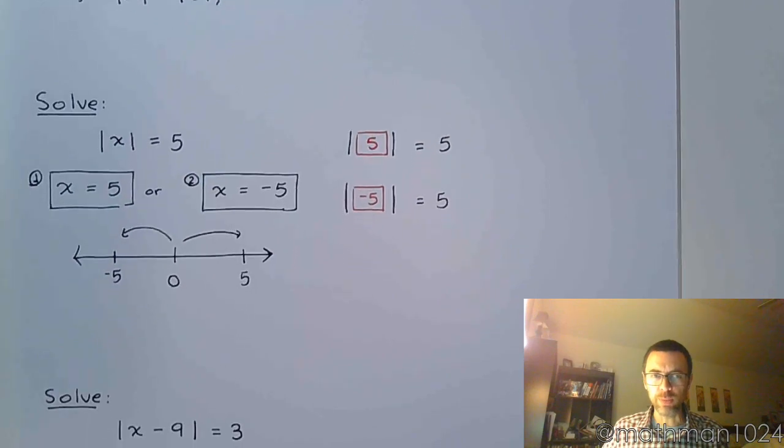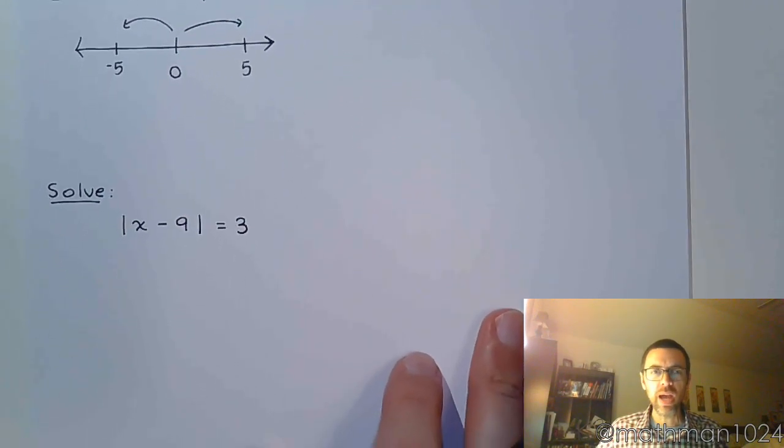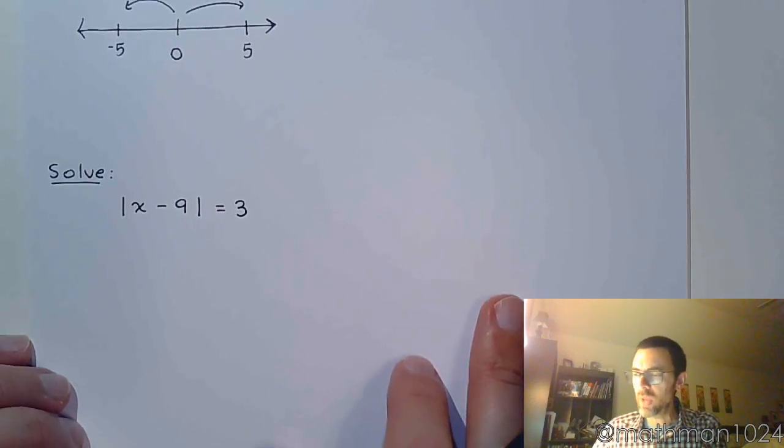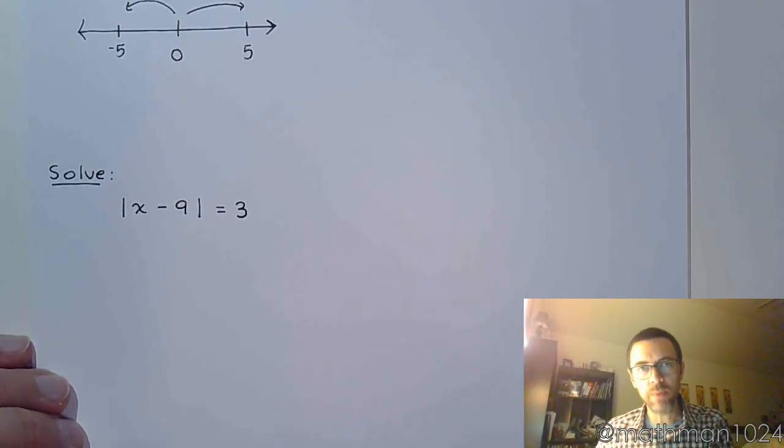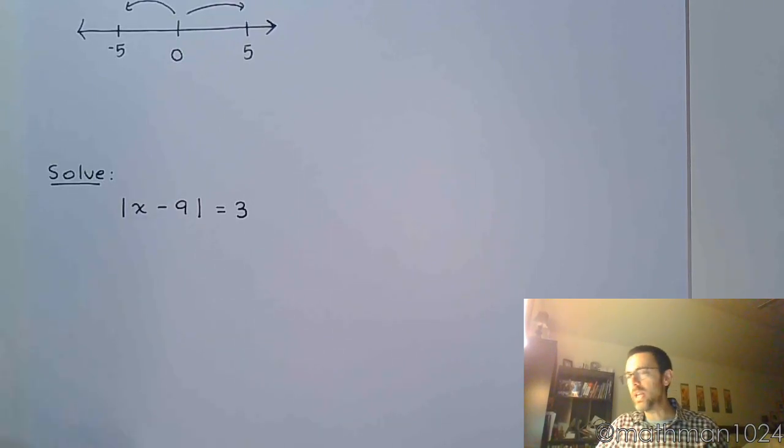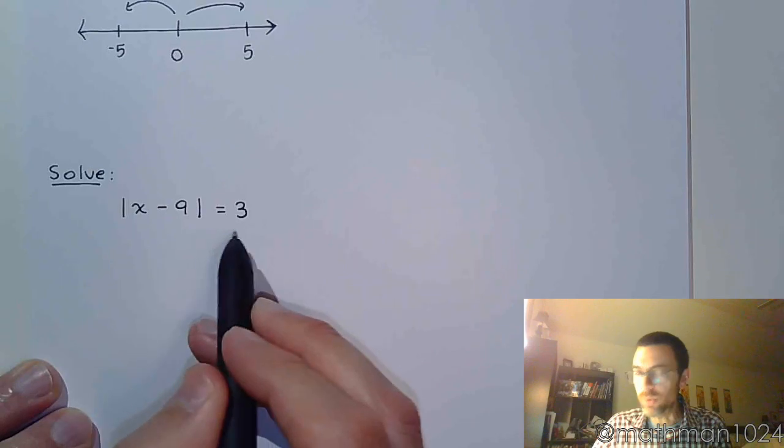Now let's look at this next example. I have the absolute value of x minus nine is equal to three. This absolute value has to be by itself first and foremost. For any of these absolute value equations that we're seeing in this section, and for the absolute value inequalities that we're going to be seeing in the next section, you must have the absolute value by itself first.